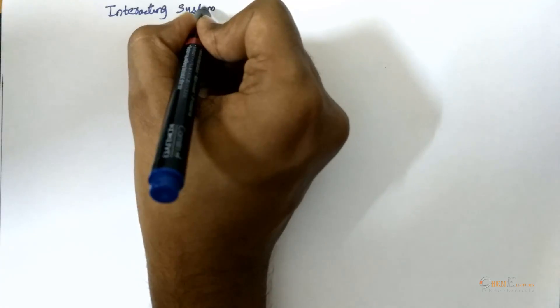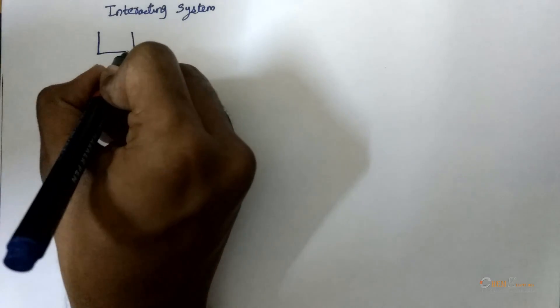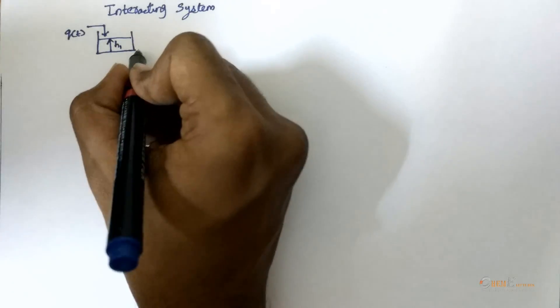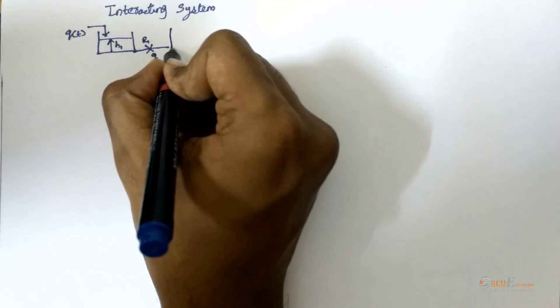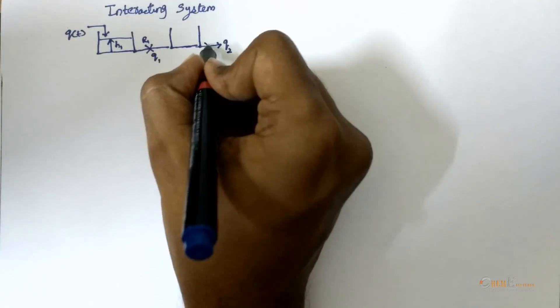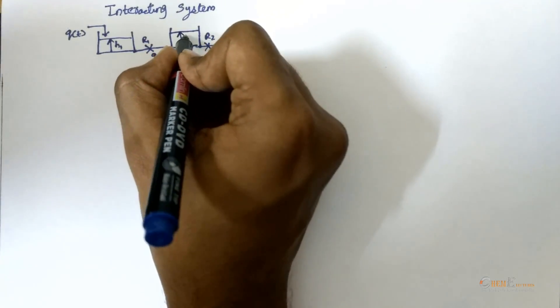Let's move on to the interacting system. Consider a two-tank interacting system having an inlet flow rate Q with height H1 and resistance R1 with outlet flow rate Q1. It is connected to another tank with outlet flow rate Q2, resistance R2, and height H2.